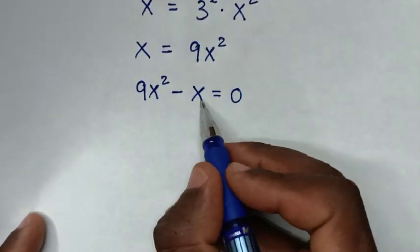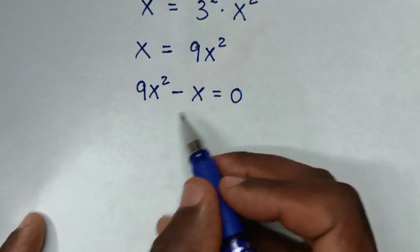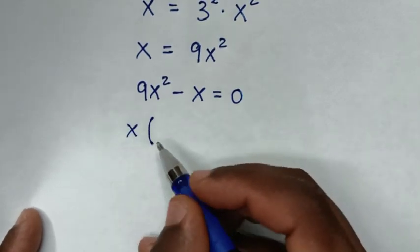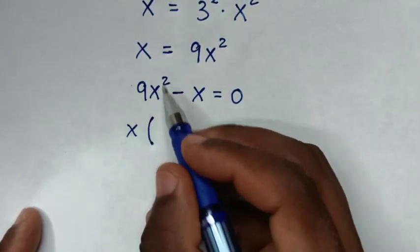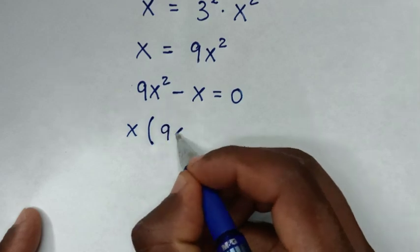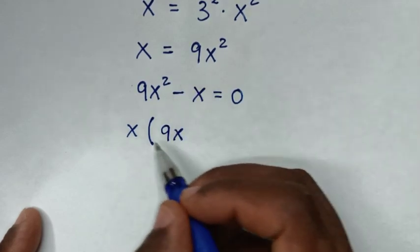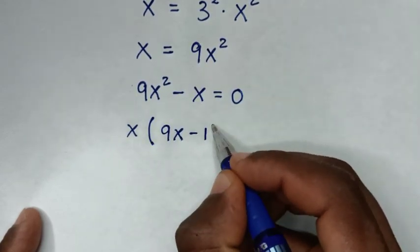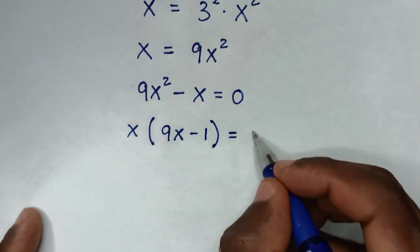Then in here, x is common. So we will take x out of bracket, then 9 x square divided by x is 9 x minus x divided by x is minus 1, bracket is equal to 0.